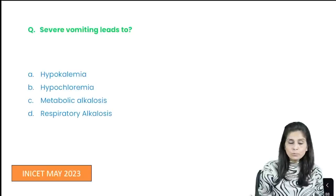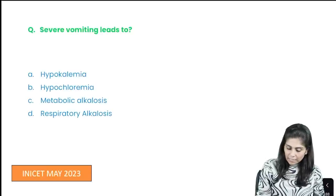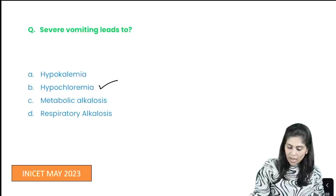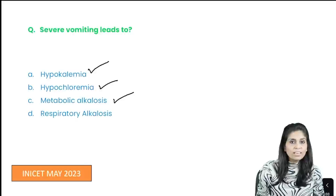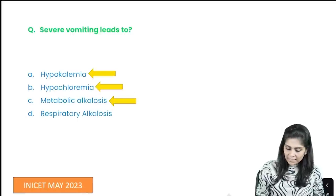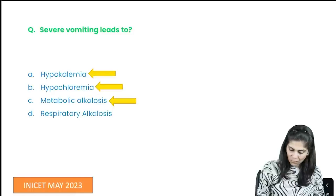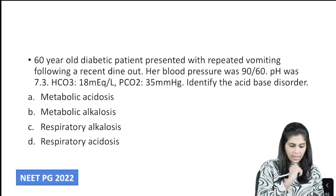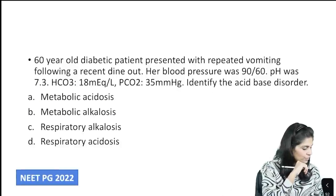So the electrolyte abnormalities seen in severe vomiting are: number 1, hypochloremia; number 2, hypokalemia; number 3, metabolic alkalosis. So A, B, and C are the three correct answers. This also explains why there is paradoxical aciduria in these patients.